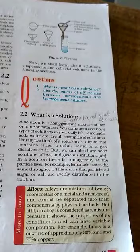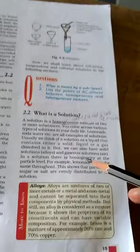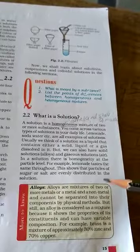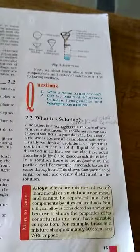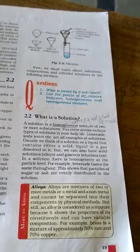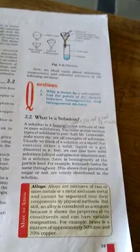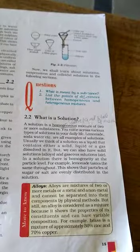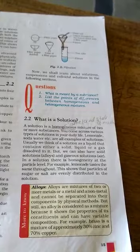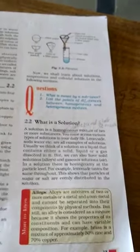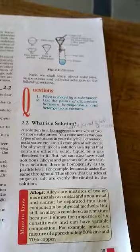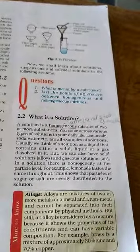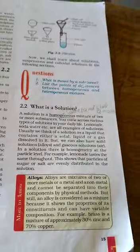We can also have solid solutions — for example, alloys. Ice is a solid, so alloys are called solid solutions. A gaseous solution contains air. In a solution, there is homogeneity at the particle level. For example, lemonade tastes the same throughout because sugar or salt is evenly distributed in the solution.